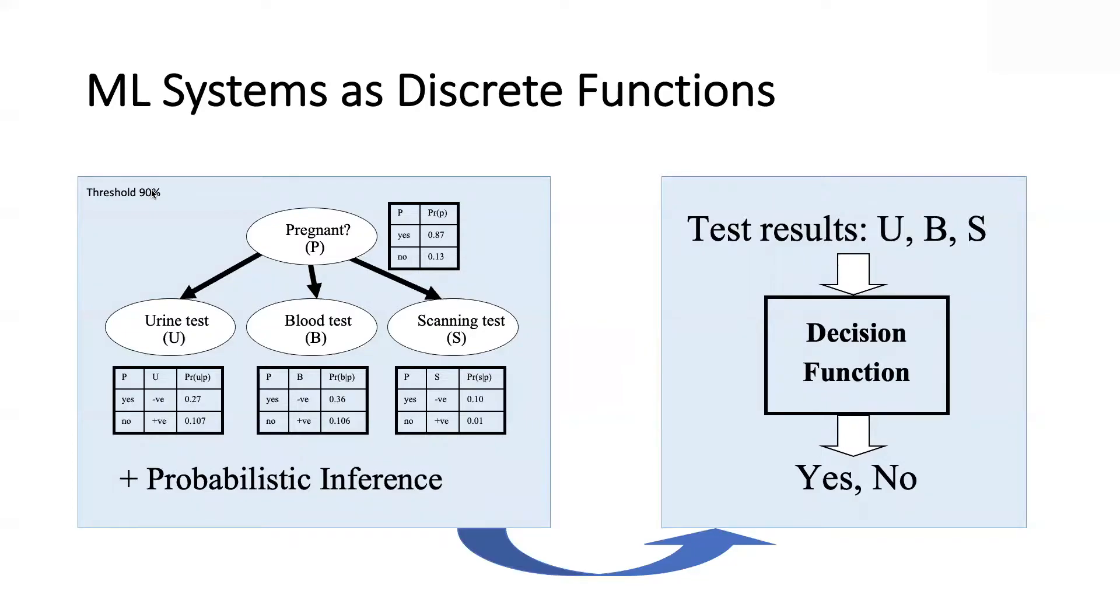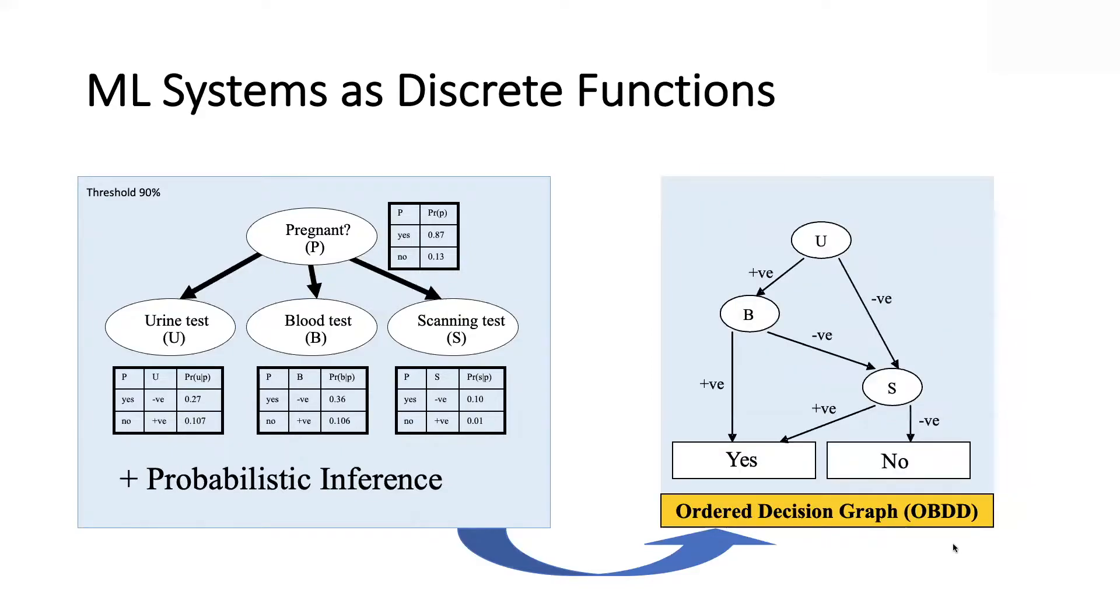So even though the system is numeric and learned from data, it does actually implement a discrete decision function, in the sense that the input are discrete values of these variables and the output is a discrete decision. And one way to represent such an input-output behavior symbolically is using decision graphs. So in this case, this decision graph was compiled from this naive Bayes classifier.